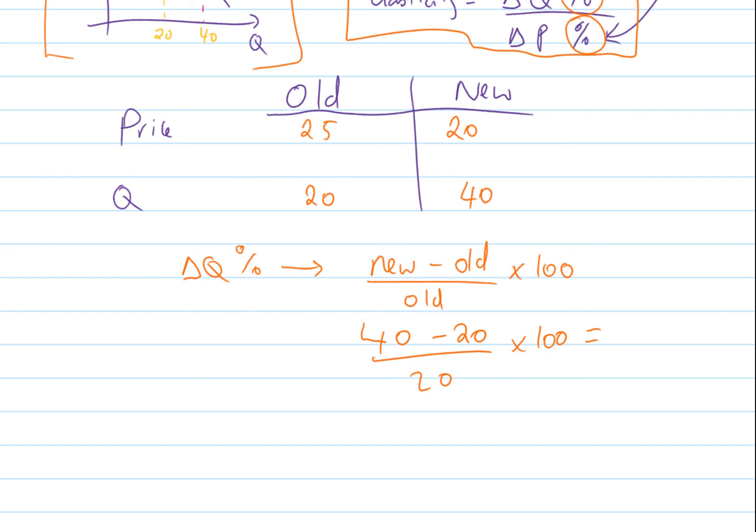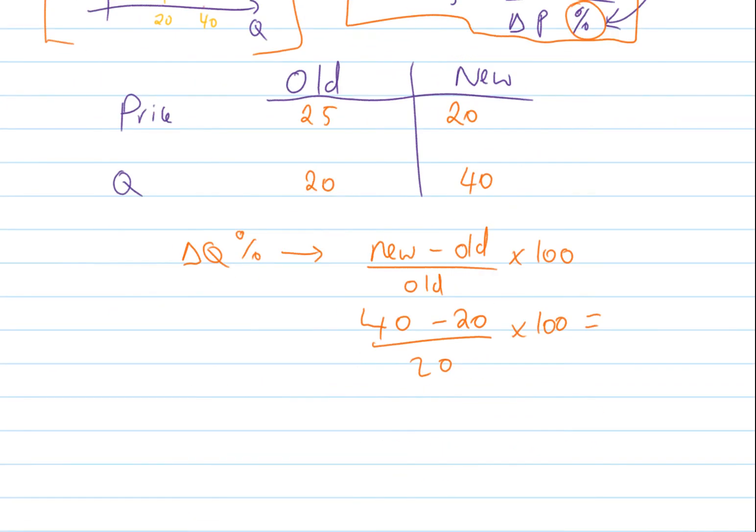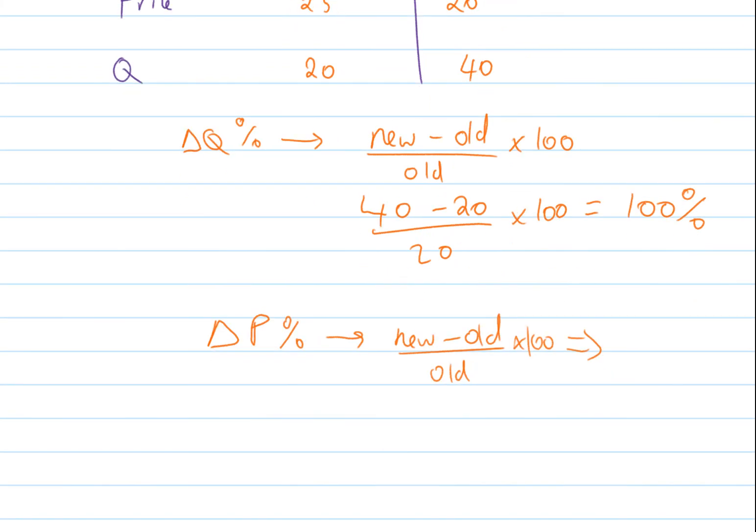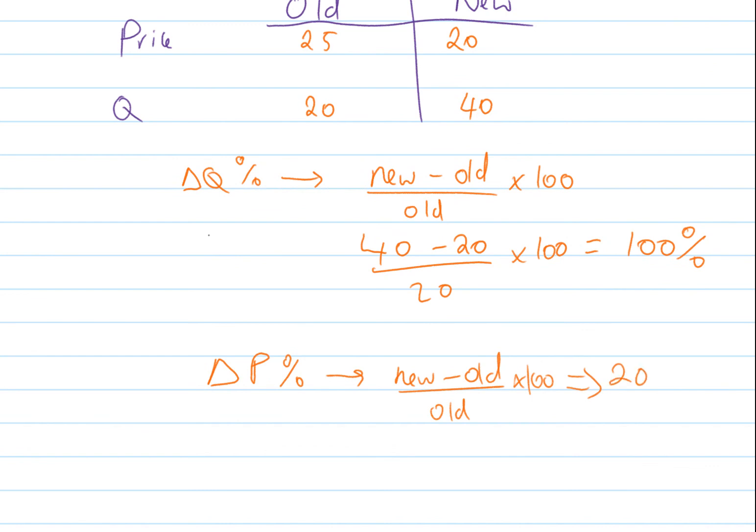What about price? The change in price percentage-wise is new take away old, divided by old, times 100. In our case, 20 take away 25, divided by 25, times 100, gives you minus 20 percent. Note the negative sign, because our new price is lower than the original one.